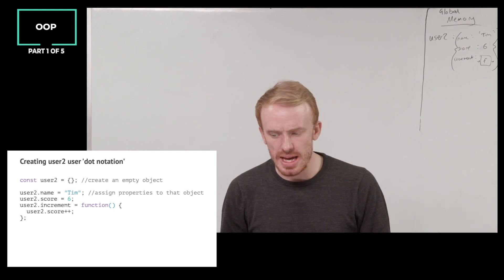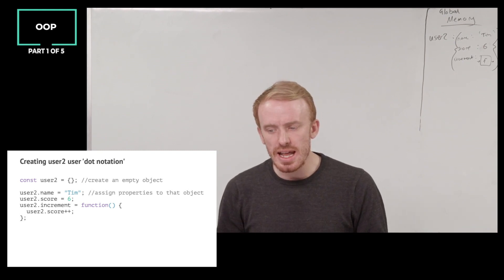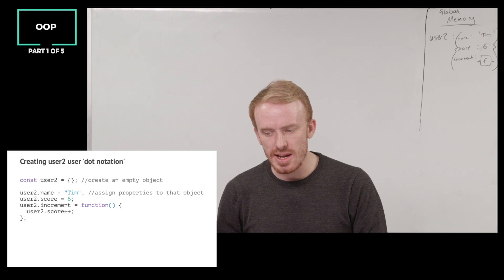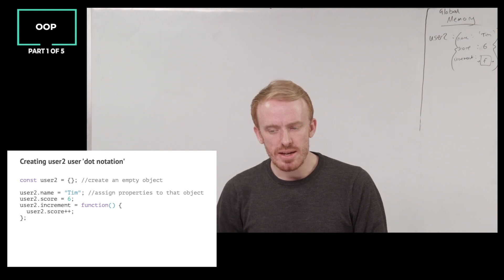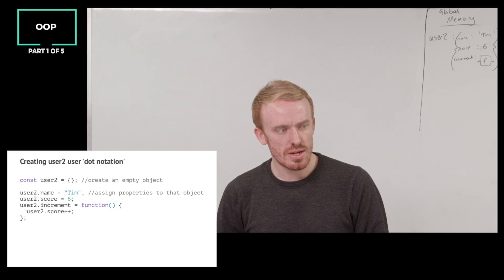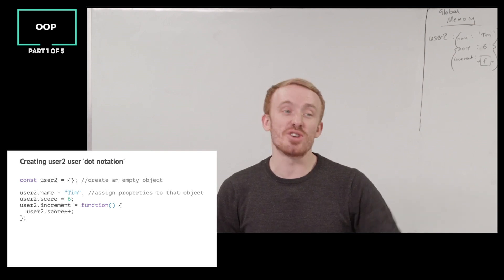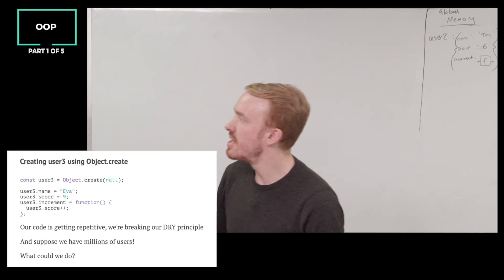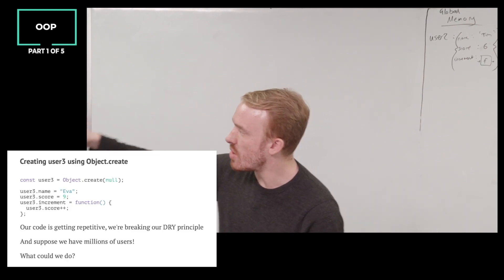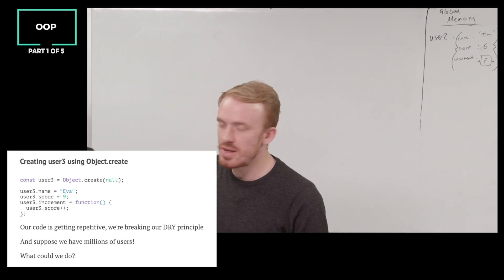Who can tell me another way of declaring an object? It's going to declare an empty object. It's using a built-in feature of JavaScript. Mijin, do you know another way of creating an empty object? There's the object.create. There's the object.create. Fantastic, Mijin. Spot on. That's exactly it. Using object.create.